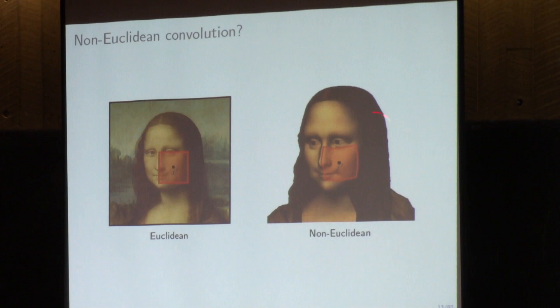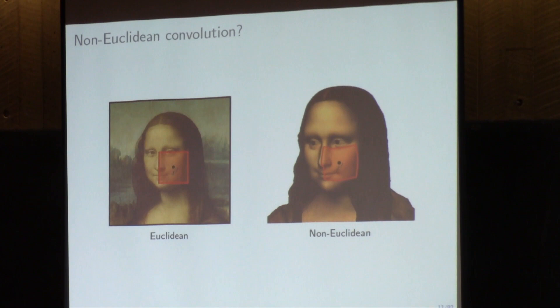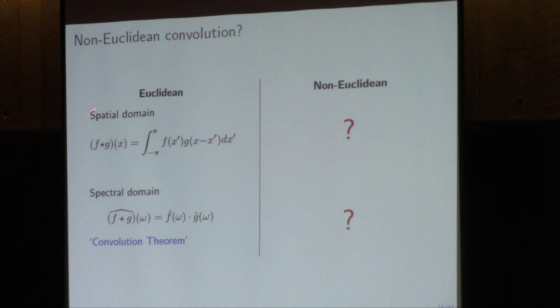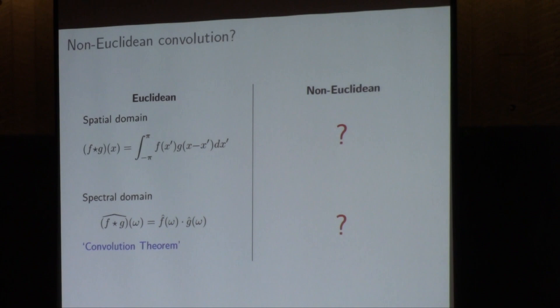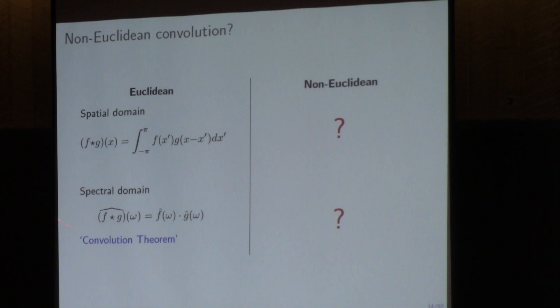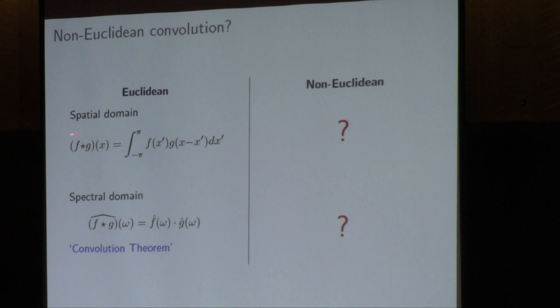An audience member asks: is there some reason not to do something naive, like preprocessing into a Fourier domain or using a wavelet transform? The speaker responds: that's actually the next slide. In the Euclidean setting we have two options for defining convolution — in the spatial domain or in the spectral domain — and the two views are equivalent. Convolutions are essentially circulant matrices, and their eigenvectors are the Fourier transform. So convolutions are diagonalized by the Fourier transform, allowing pointwise multiplication in the Fourier domain. We have two strategies for generalizing to non-Euclidean domains: define an analogy of the Fourier transform on a graph or manifold, or use some spatial construction.